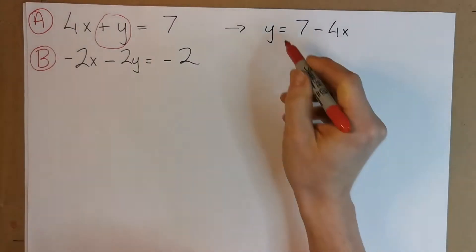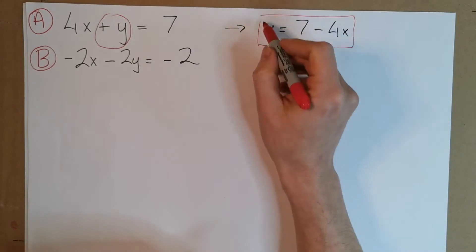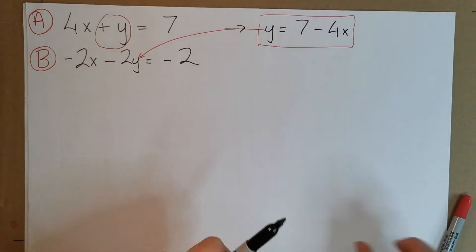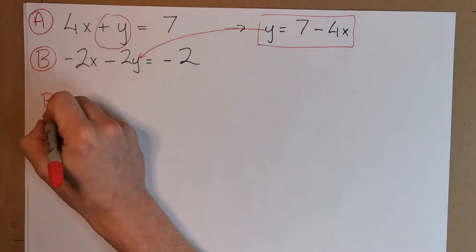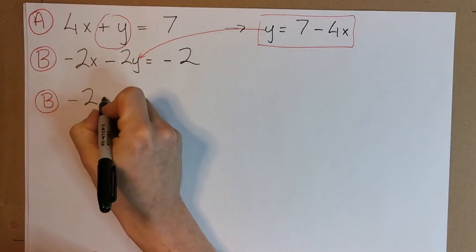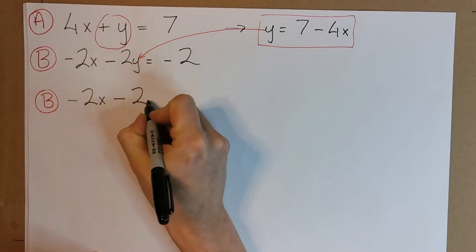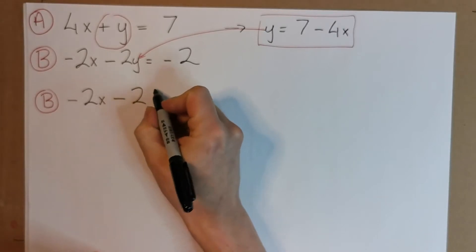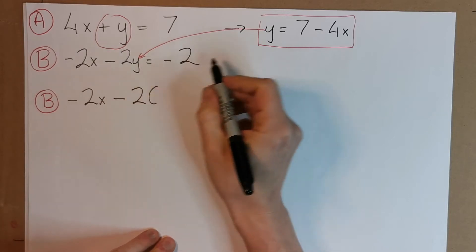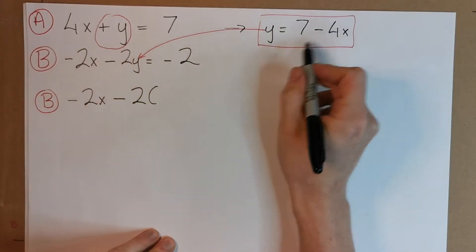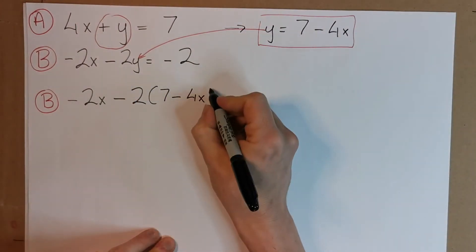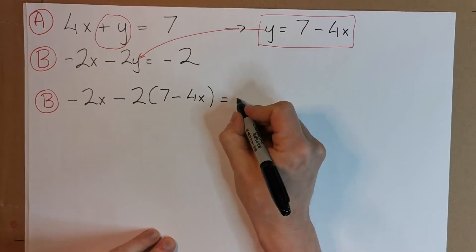What we're going to do now is we're going to take this value for y that we got, and we're going to substitute this value for y in the second equation. So we're going to rewrite equation B, and we're going to say, minus 2x minus 2 times. Now, always when you're replacing a variable with something else, it's best to use brackets. Just good practice, because you mightn't mess up your signs otherwise. So instead of y, now we're calling y 7 minus 4x. And we will close that bracket, and equal to minus 2.